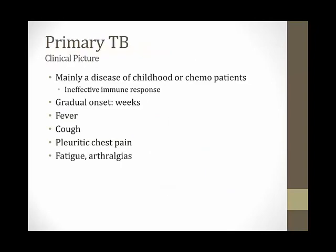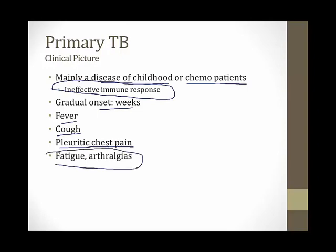Most people who get a primary exposure to TB do not get sick — they either completely clear the infection or it's walled off in a latent phase. Primary disease is rare and usually affects children or immunocompromised patients. They develop a syndrome that's gradual in onset over a few weeks: fever, cough, pleuritic chest pain from lung inflammation stretching the pleura, and symptoms like fatigue and arthralgias.